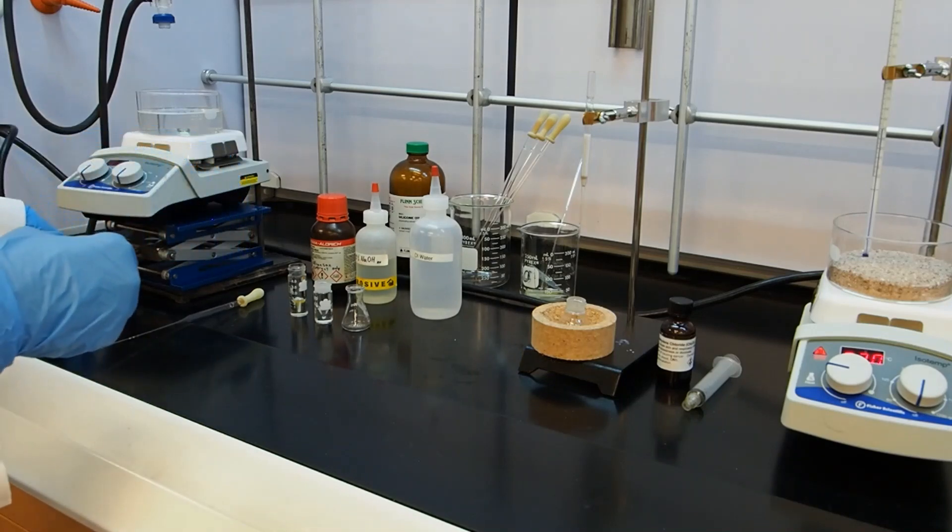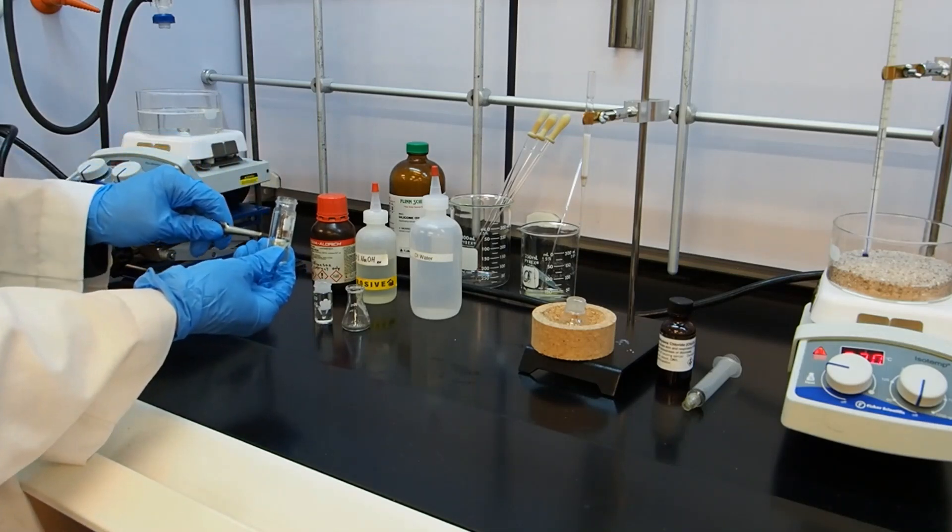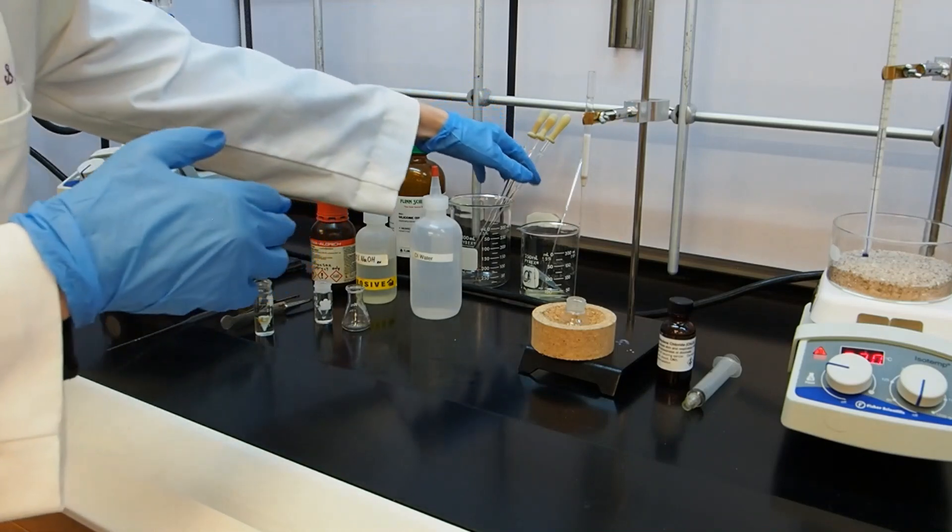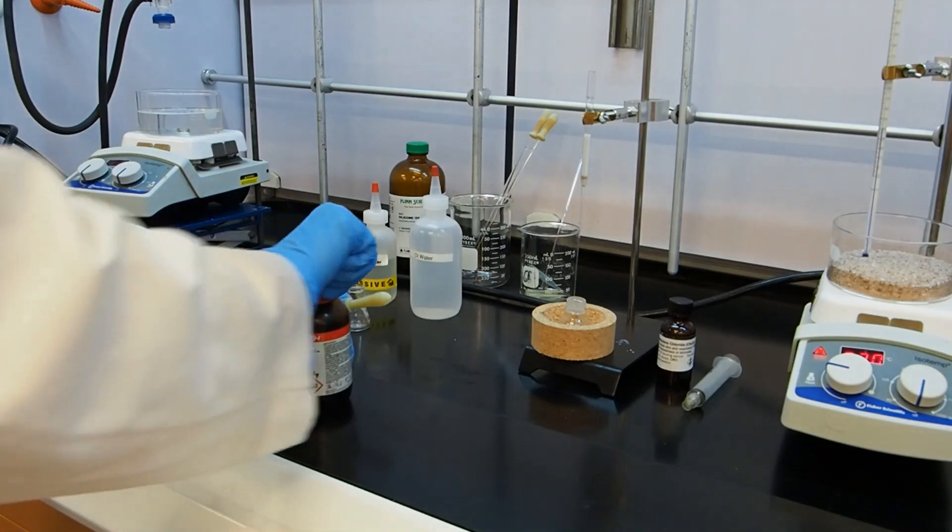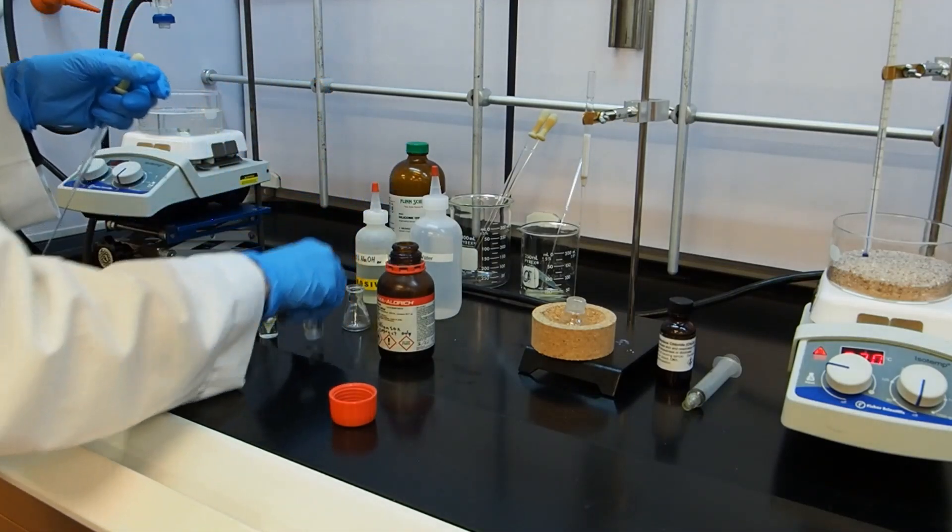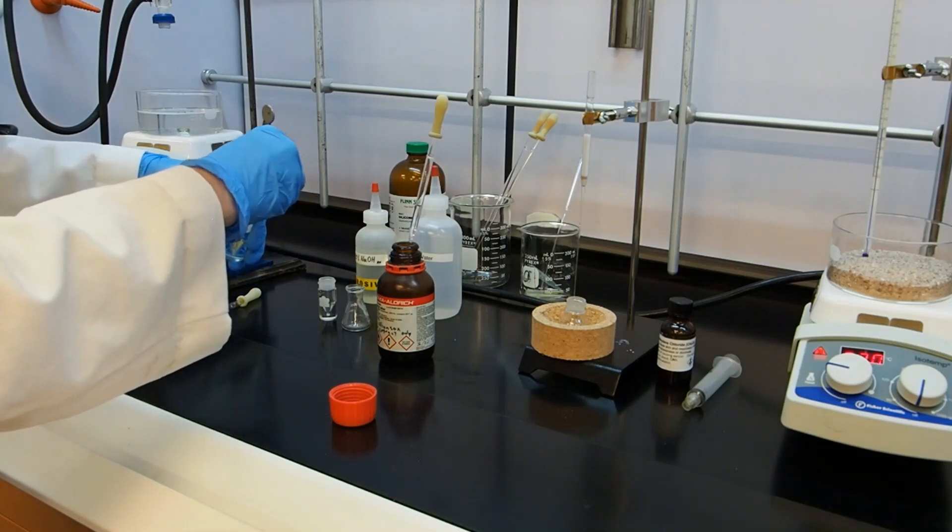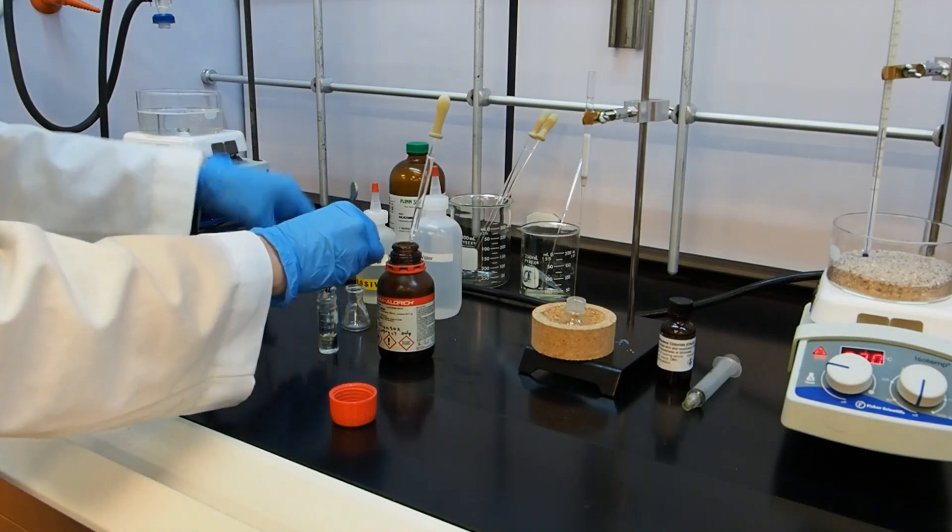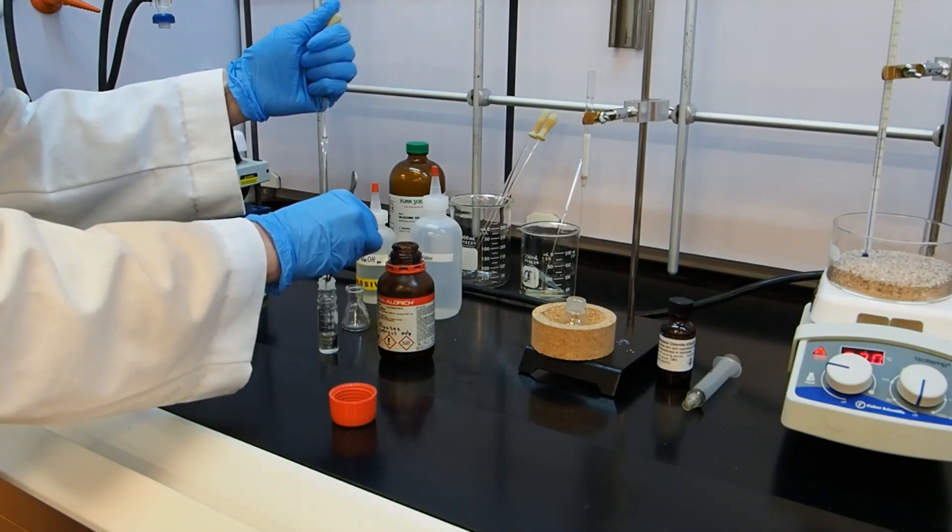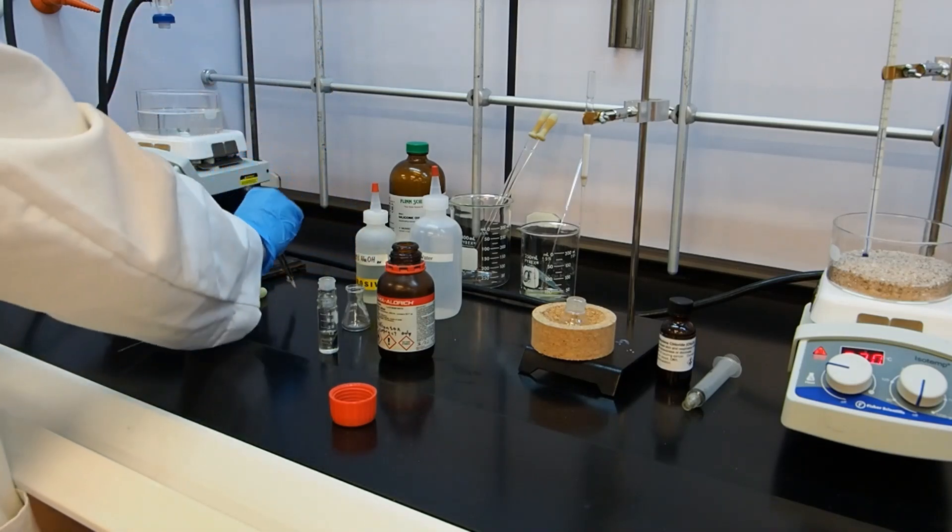So the next thing to do is we need to get this spin vane out of here, but we don't want to lose any product that might be on it. So what we're going to do is we're going to get a milliliter or so, which is approximately one squirt with these pipettes. We're going to retrieve the stir bar with the forceps, hold it over top of the reaction, and rinse it off with a milliliter of ether. That way we don't throw away any product that was stuck to our spin vane. Now I can set that aside to be washed later.